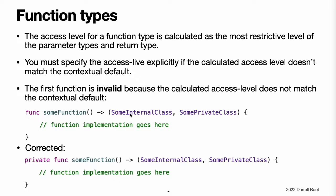The function's return type is a tuple type composed from two of the custom classes defined above in custom types. One of these classes is defined as internal, and the other is defined as private. Therefore, the overall access level of the compound tuple type is private, the minimum access level of the tuple's constituent types. Because the function's return type is private, you must mark the function's overall access level with the private modifier for the function to be valid. It is not valid to mark the definition of some function with the public or internal modifiers, or to use the default setting of internal, because public or internal users of the function might not have appropriate access to the private class used in the function's return type.